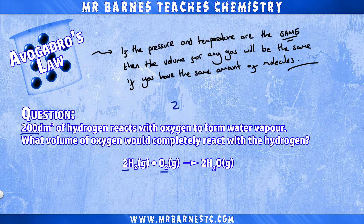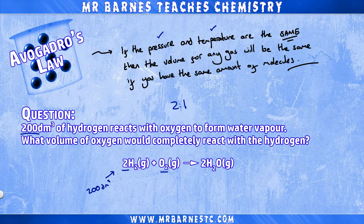You can see here I've got a ratio of 2 to 1. Now if the pressure and temperature are kept the same, all I need to do is say I've got 200cm³ in a ratio of 2 to 1, therefore I have less oxygen, so I divide by 2, giving me 100cm³ of oxygen.